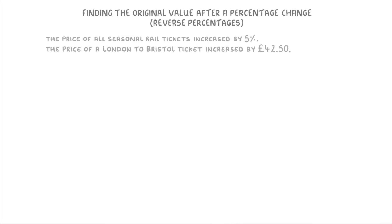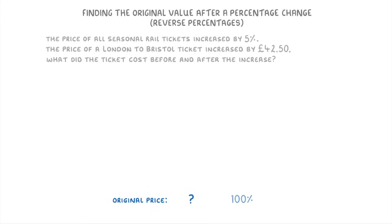Now, just before we finish, we need to look at a slightly different version of these reverse percentage questions — ones where they tell you how much the price has changed by, rather than telling you the new price. For example, in this question, we're told that the price of all seasonal rail tickets increased by 5%, and that the price of the London to Bristol ticket increased by £42.50. What did the ticket cost before and after the increase?